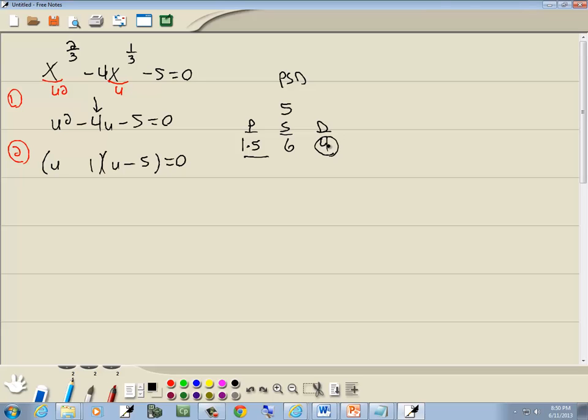Now, the number we circled in the difference column, D for different signs, which means one's positive and one's negative. If the 5 is negative, then the 1 has to be positive.